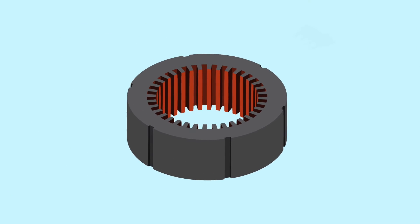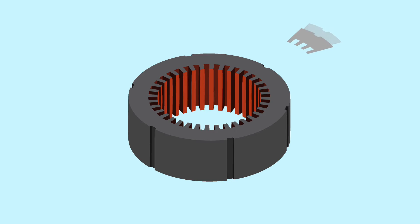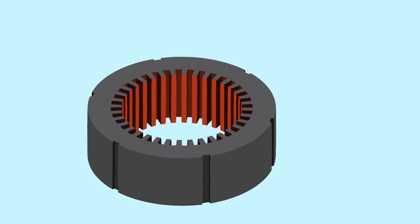stator cores of rotating machines are composed of multiple stacked layers, which are insulated against each other. This is done to minimize the eddy current losses.